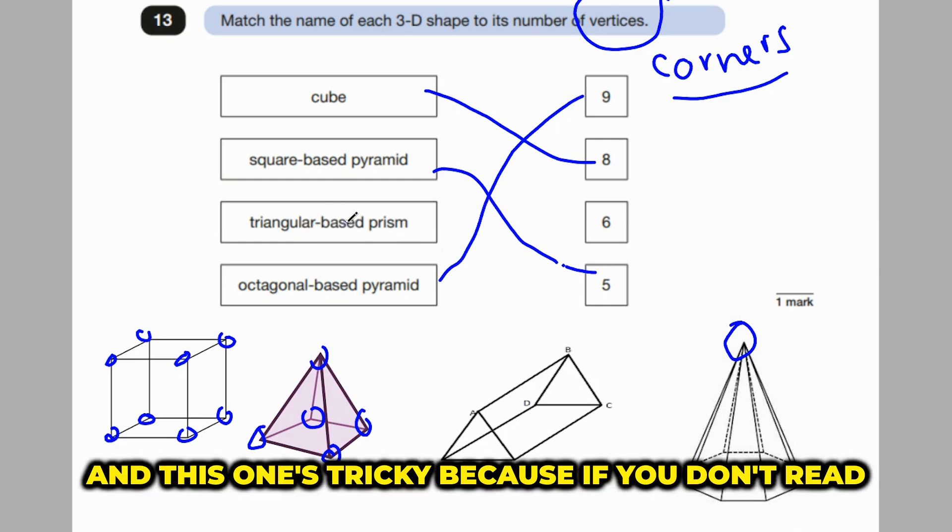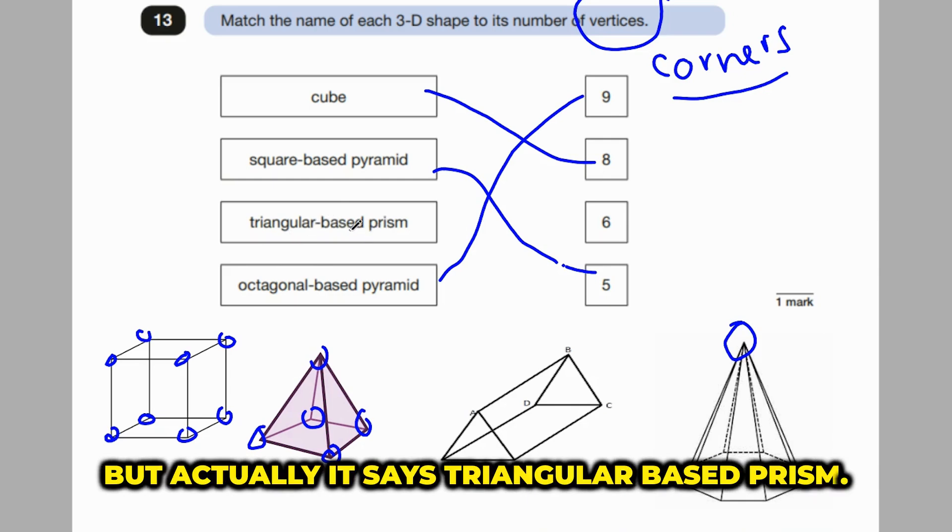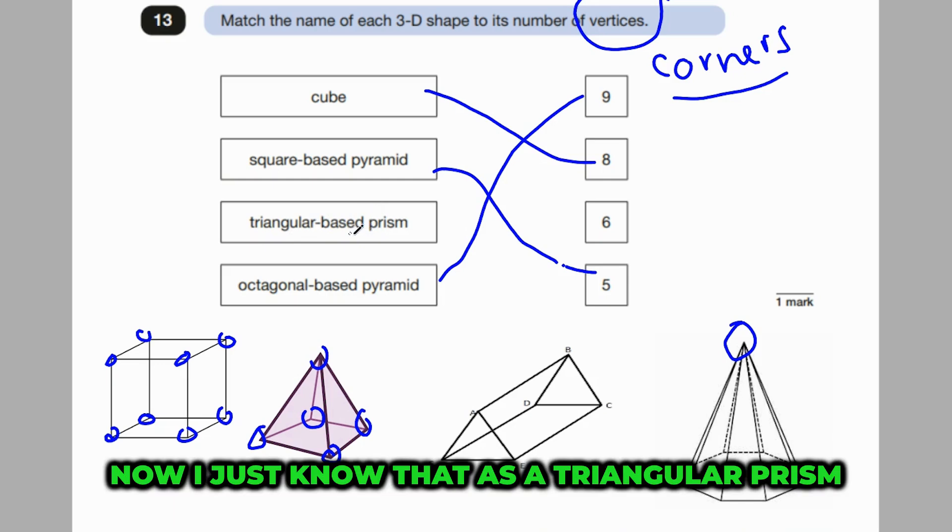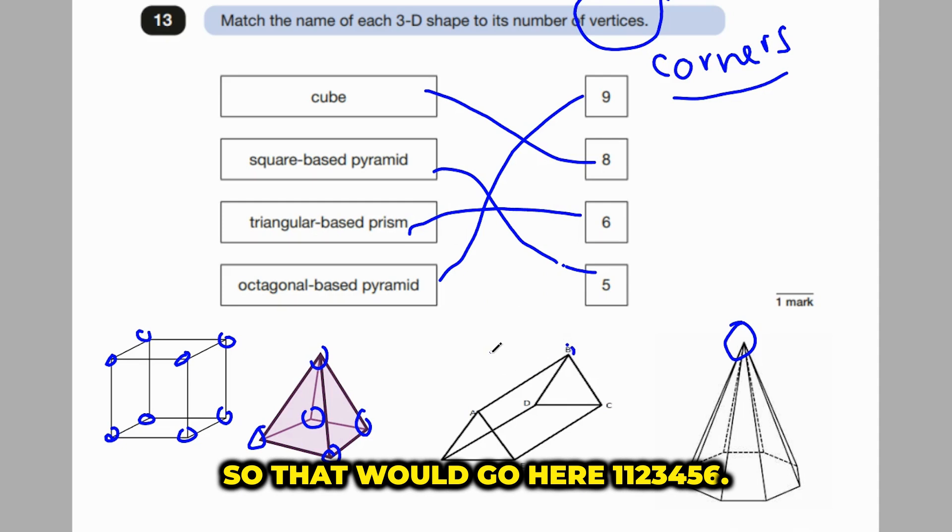And this one's tricky because if you don't read it carefully, you might say triangular-based pyramid. But actually, it says triangular-based prism. Now, I just know that as a triangular prism. And it has 6 corners. So that would go here. 1, 2, 3, 4, 5, 6.